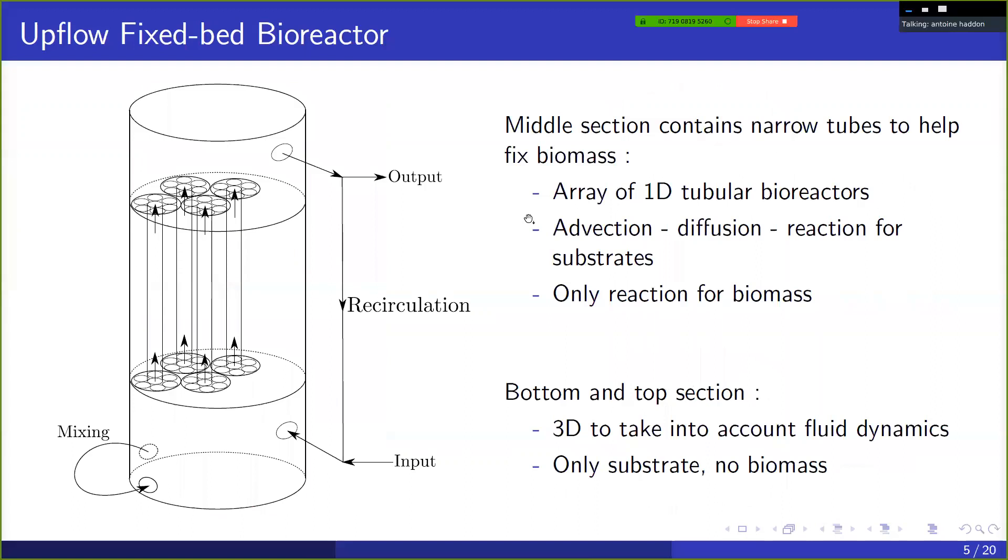So to model this, we're going to take advantage of the reactor geometry, specifically of the fixed bed and of the fact that we have these thin tubes. And we consider that they're only one dimensional to reduce the spatial dimension in this section. And the second observation is that most of the biomass is actually fixed on these tubes. So it's only present in this middle section. There is very little biomass in the top and bottom sections. So the result is a model that's made up of an array of one dimensional tubular reactors in the middle, and then three dimensional zones at the bottom and top.